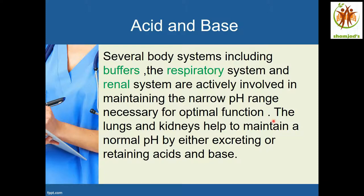The next systems are the respiratory system and the renal system. They maintain a normal pH by either excreting or retaining acids and base. In the case of acidosis, the kidney will start to excrete acids — it will remove the extra acid from the fluid and retain the base. If acid is removed and base is retained, the base will go and neutralize the acid.